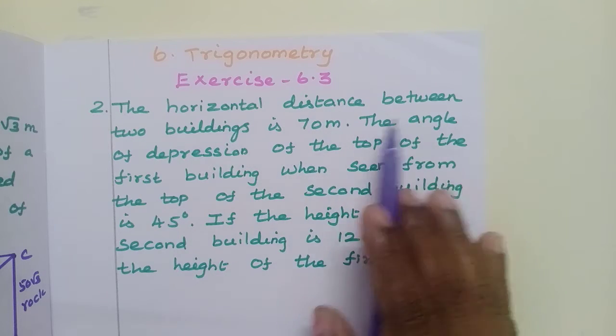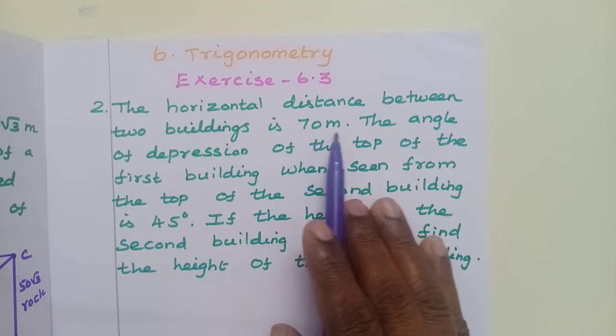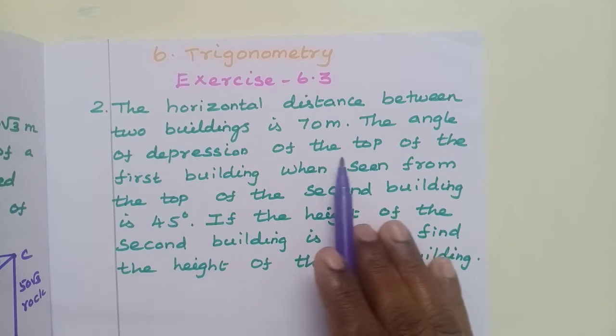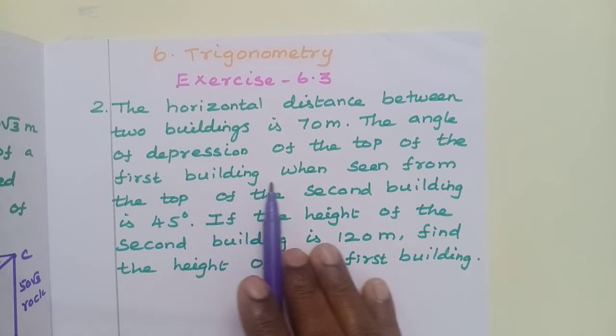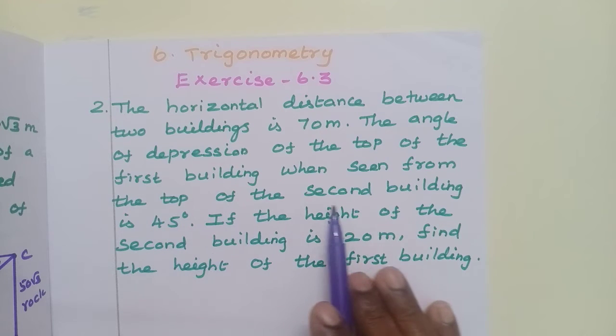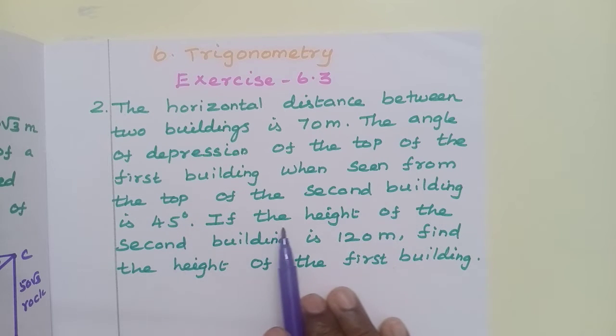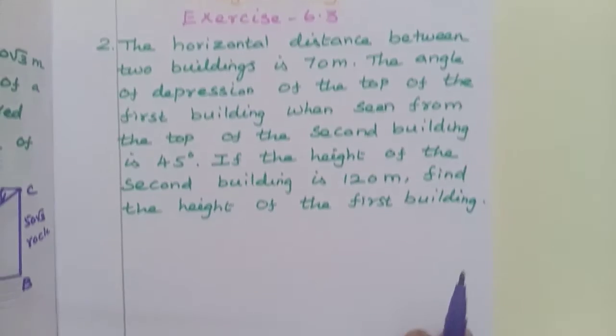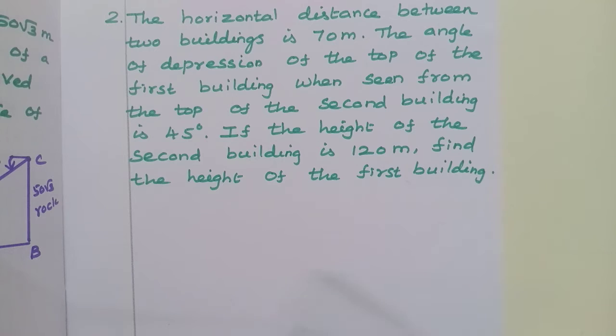The horizontal distance between two buildings is 70 meters. The angle of depression of the top of the first building when seen from the top of the second building is 45 degrees. If the height of the second building is 120 meters, find the height of the first building.